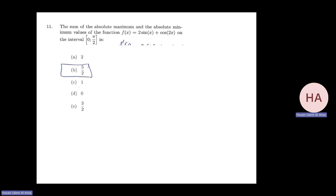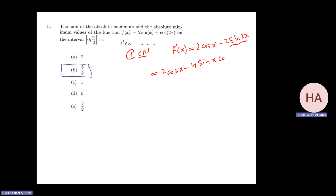For this function, we want the sum of the absolute maximum and absolute minimum. I find f prime first to get the critical numbers. f prime equals 2 cosine x minus 2 sine 2x, which is 2 cosine x minus 4 sine x cosine x. Taking 2 cosine x as a common factor gives 2 cosine x times (1 minus 2 sine x). Setting this equal to zero gives cosine x equals 0 or sine x equals 1/2.